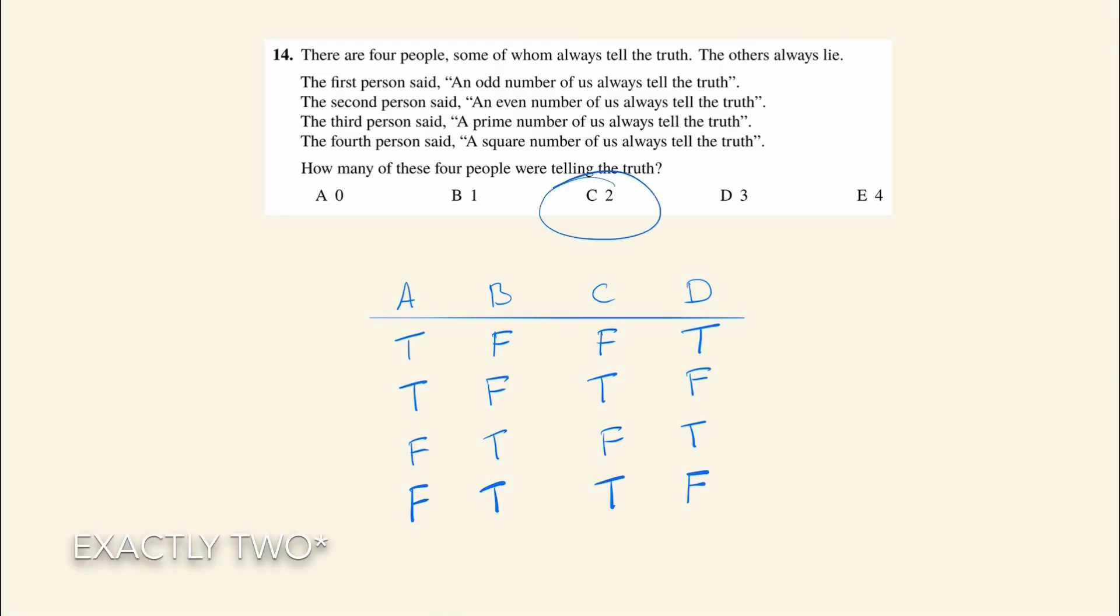Only one of these four possibilities is correct. We can go through them now to see which one. If we start with D, a square number always telling the truth, that has to be a lie because we know there are always two people. So wherever D is a truth, that must be incorrect. And likewise, the first person saying an odd number always telling the truth, well we know that must be false as well.